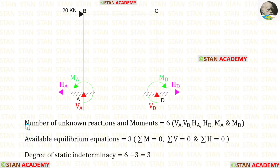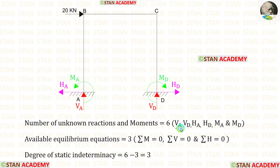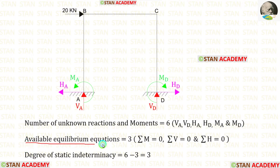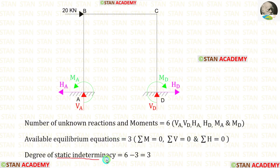In this frame, the number of unknown reactions and moments is 6. They are the vertical reactions Va and Vd, horizontal reactions Ha and Hd, and also the moments Ma and Md. The available equilibrium equations are 3: Sigma M = 0, Sigma V = 0, and Sigma H = 0. The degree of static indeterminacy is equal to 6 minus 3, which equals 3.